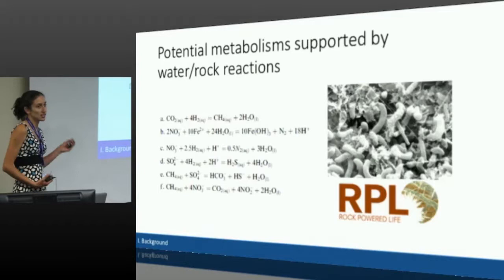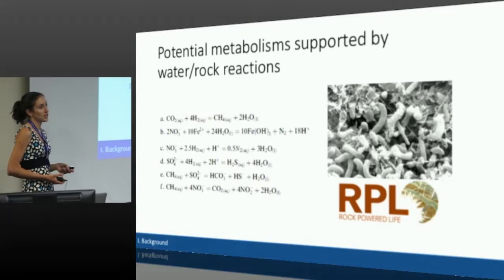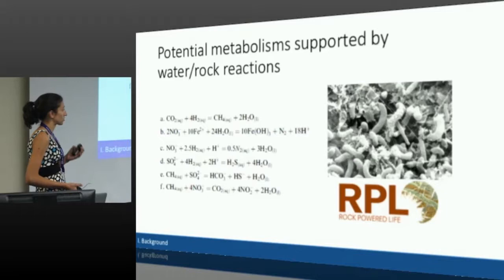Additionally, we have this electron donor — hydrogen — but you need electron acceptors too for organisms. Oftentimes nitrate and sulfate are found in these environments, so you can also have various metabolisms that utilize those. One potentially exciting metabolism would be anaerobic methane oxidation occurring in these environments. So you can see that serpentinization can fuel a variety of life.